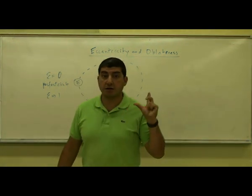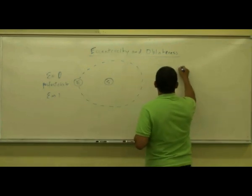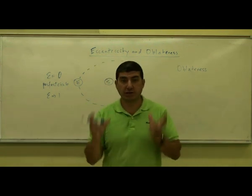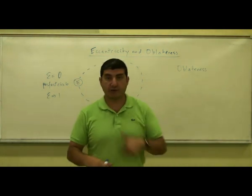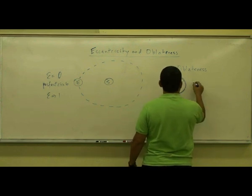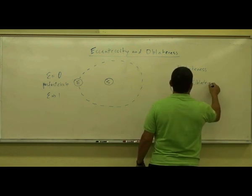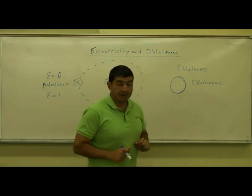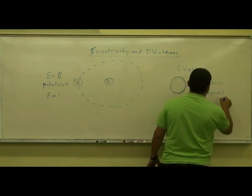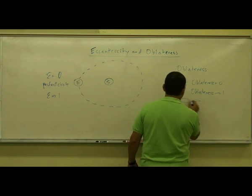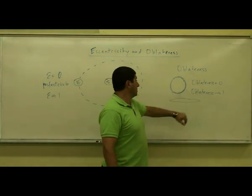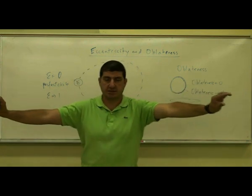Oblateness is how spherical the actual planet is — not the orbit of the planet. If a planet is perfectly spherical, the oblateness is zero. As the oblateness approaches one, the planet begins looking more like a straight line, more and more oval. So the highest oblateness you can have is one, where the planet would just be like a flat planet.